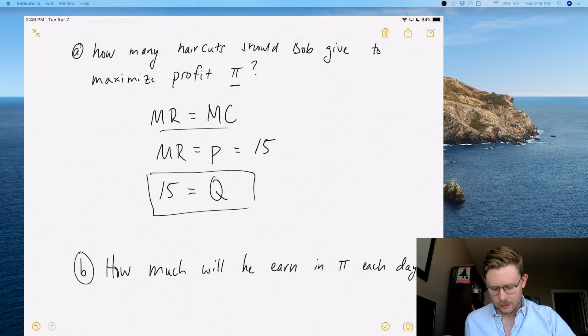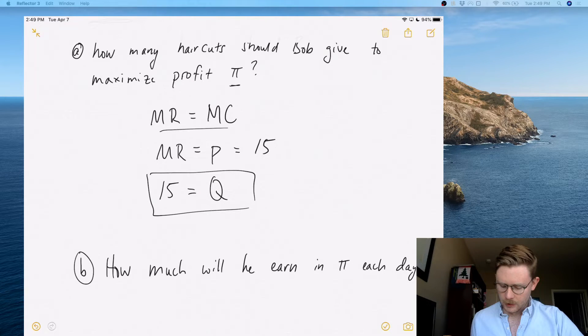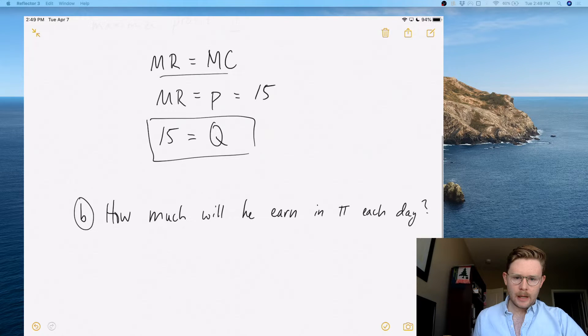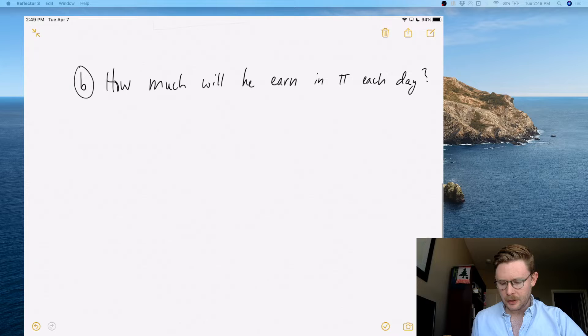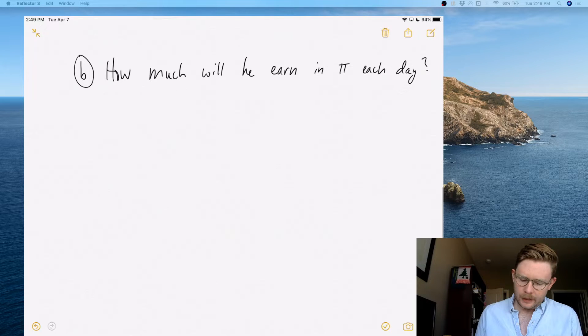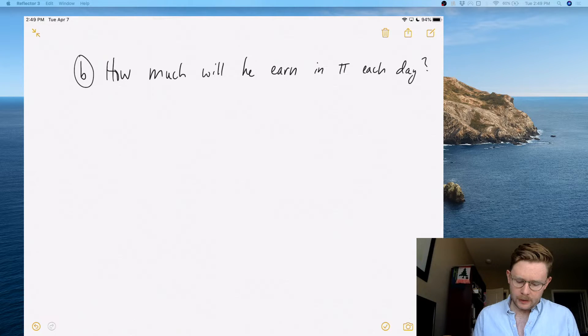Basically, the next part asks how much will Bob earn in profit each day. In order to find profit, like I said at the start, profit equals total revenue minus total costs.